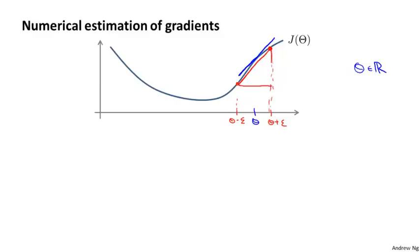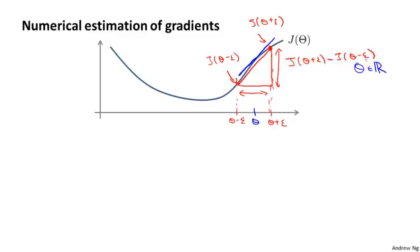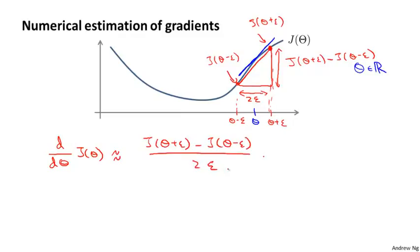Mathematically, the slope of this red line is the vertical height divided by the horizontal width. The point on top is J of theta plus epsilon, and the point here is J of theta minus epsilon. So the vertical difference is J of theta plus epsilon minus J of theta minus epsilon, and the horizontal distance is just two epsilon. So my approximation is that the derivative with respect to theta of J of theta is approximately J of theta plus epsilon minus J of theta minus epsilon, over two epsilon. Usually I'll use a pretty small value for epsilon, around 10 to the minus four.